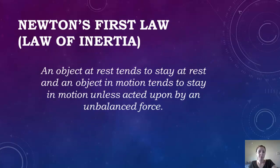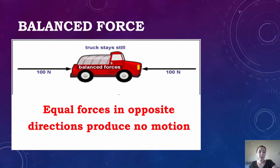You can see here that the truck has balanced forces acting upon it. For the unbalanced force example on this side, we have a smaller force of 60 newtons and a bigger force of 100 newtons. So unequal opposing forces produce an unbalanced force.